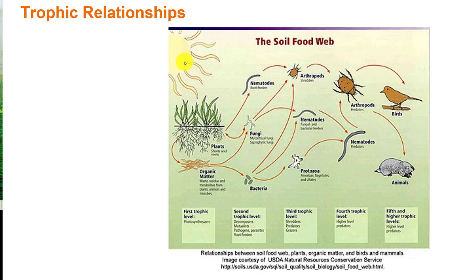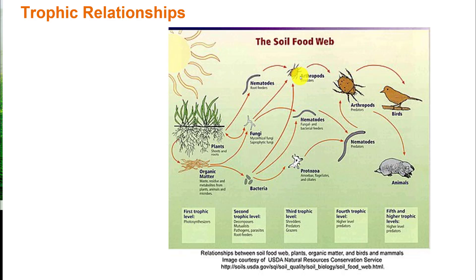At the first trophic level, we have our photosynthesizers, converting the sun's energy into a usable form for other organisms. We also have organic matter at this level, along with fungi and bacteria, whose primary role is to decompose and break up organisms, making organic tissue more available as nutrients in the soil. Nematodes are also included in this group. The third trophic level includes shredders — small animals and arthropods — which can also be predators, with larger arthropods feeding on smaller ones.